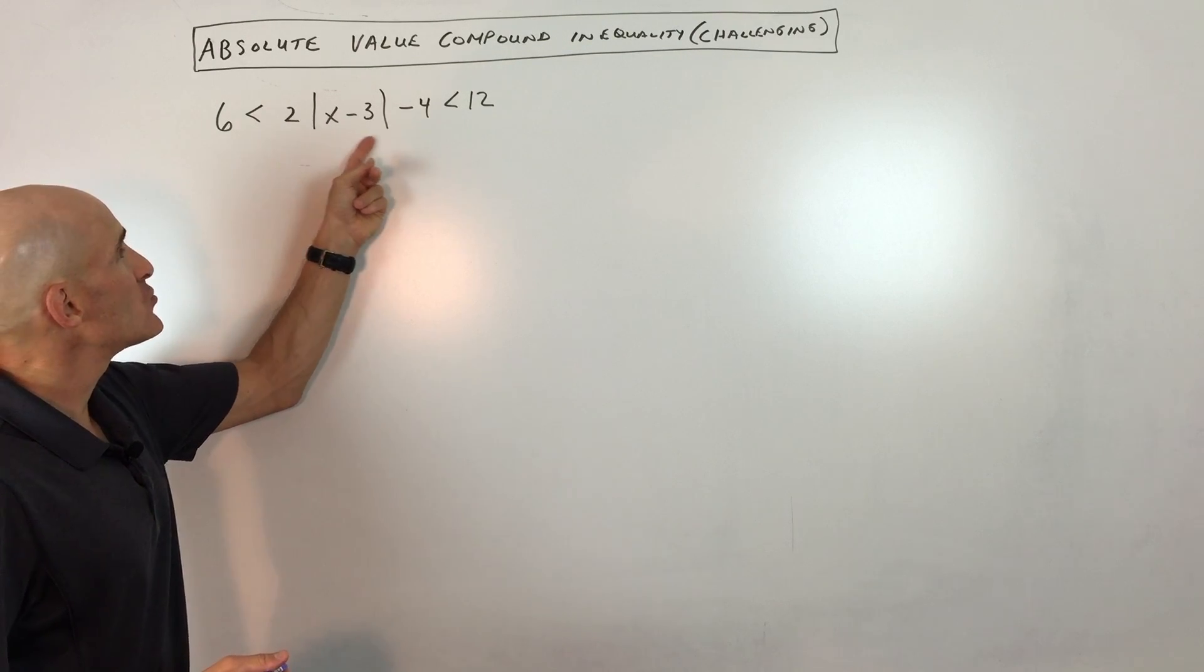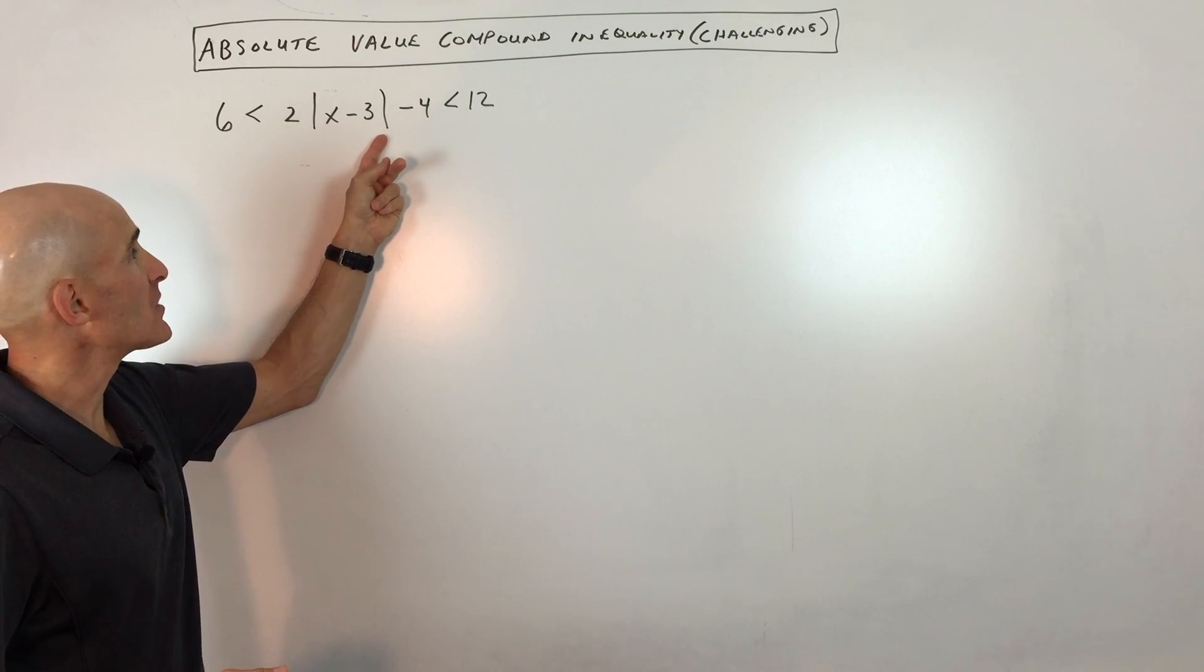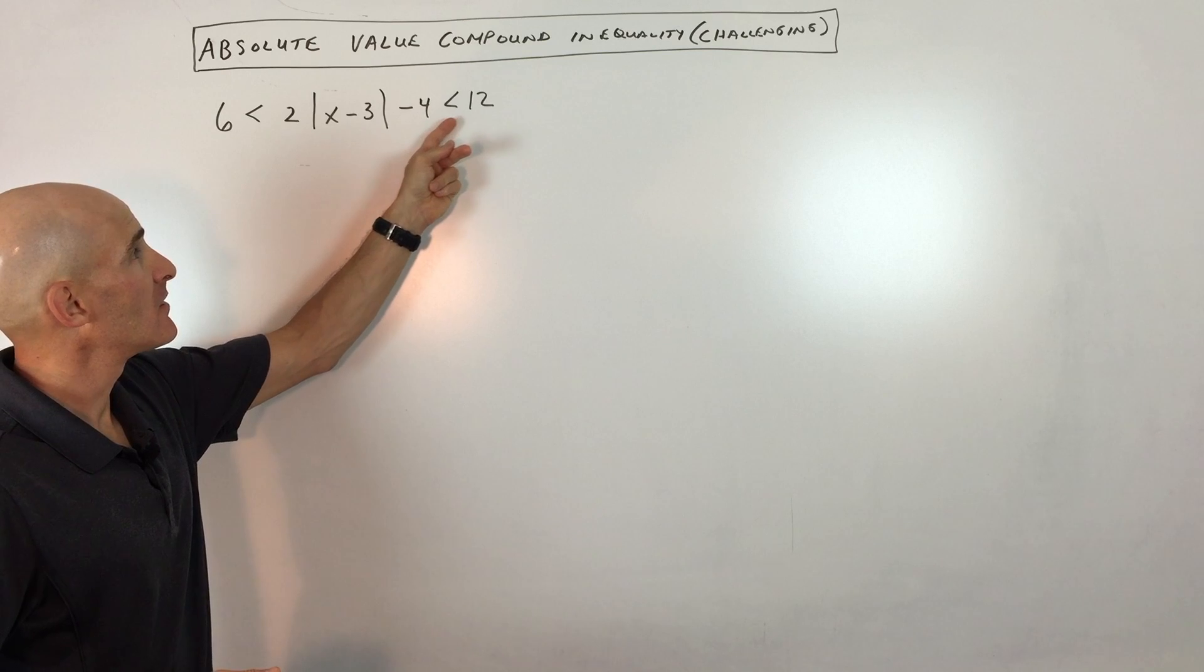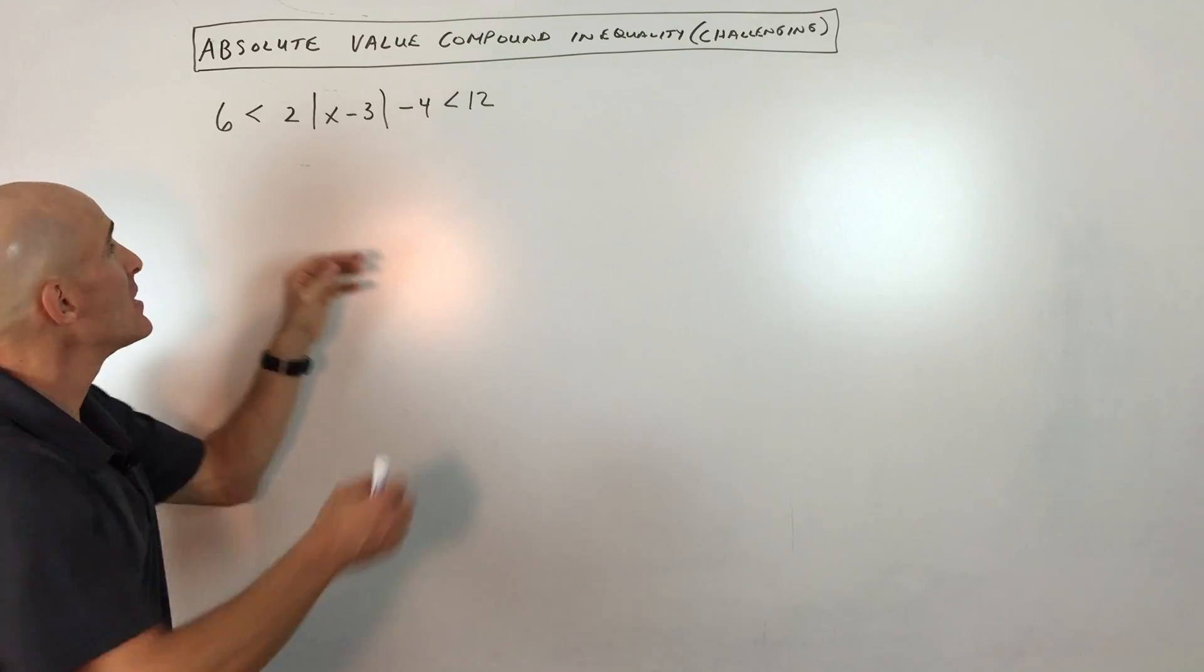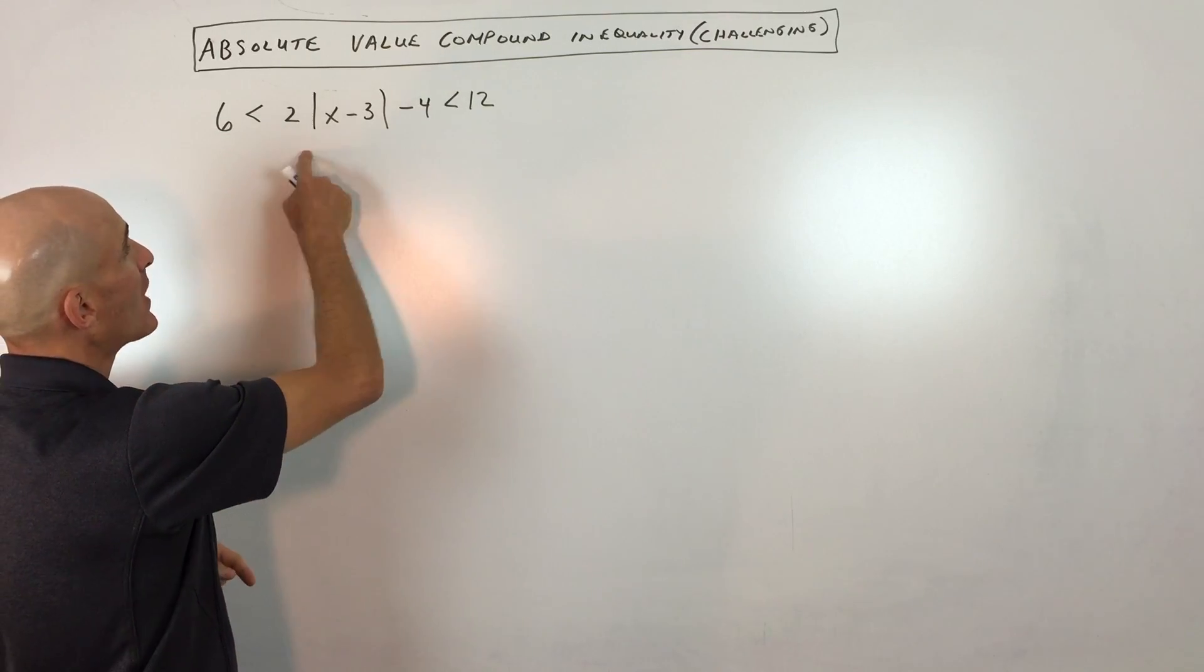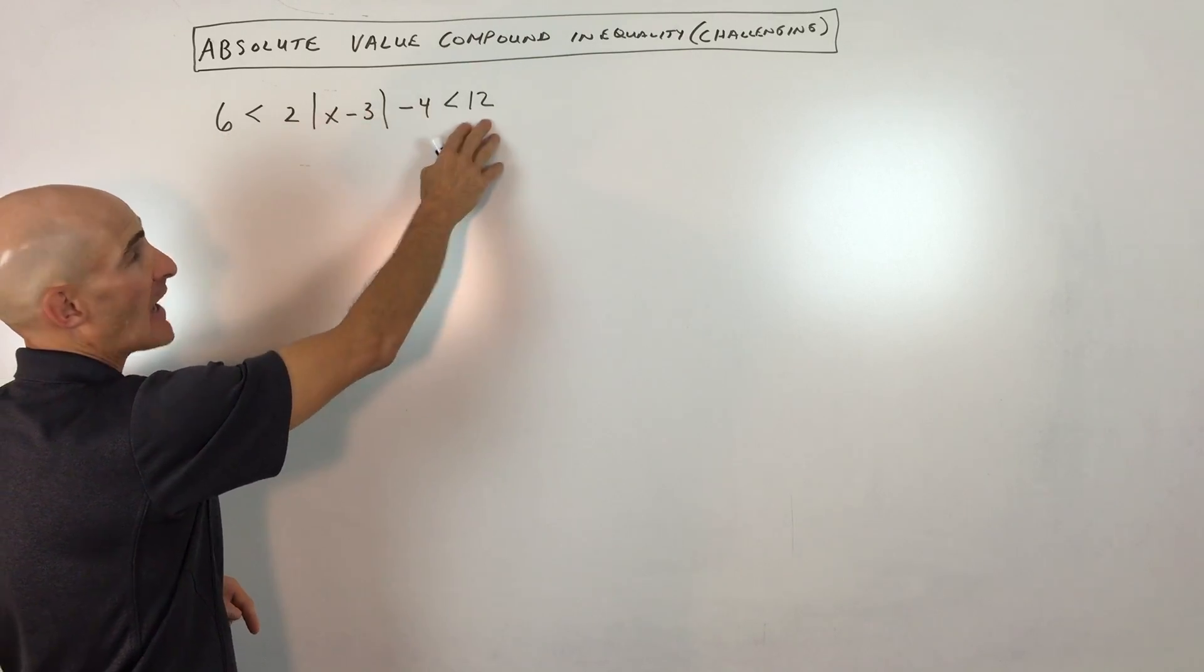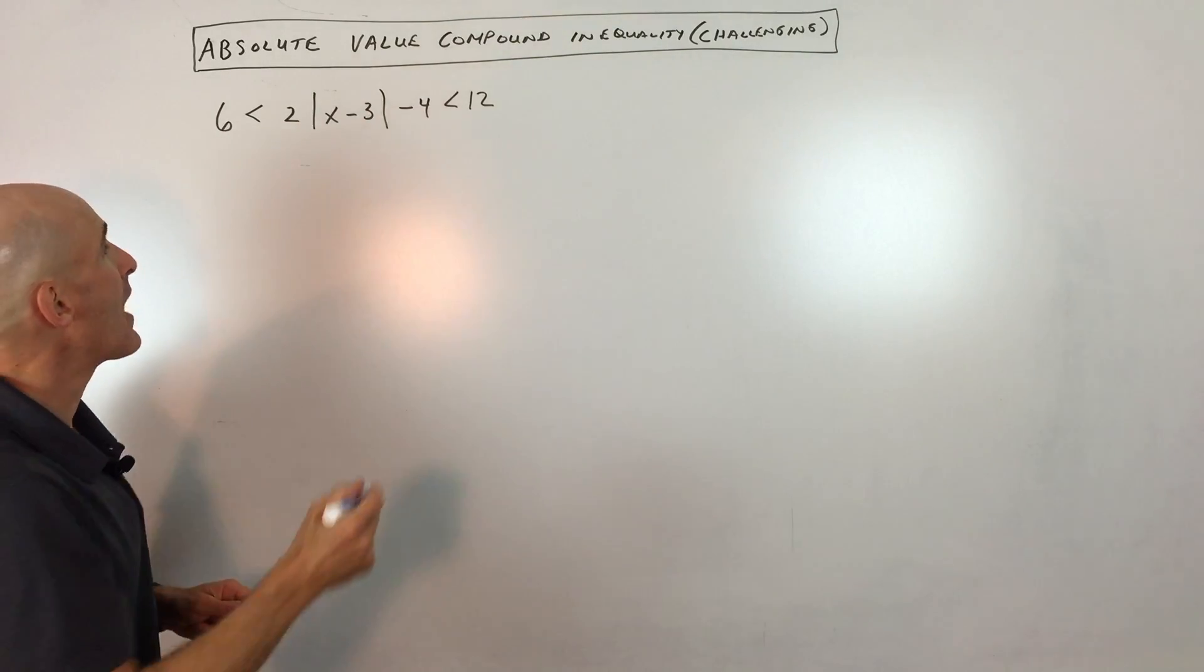We have 6 is less than 2 times the absolute value of x minus 3 minus 4 is less than 12. So it's a compound inequality. This whole quantity here is greater than 6 and less than 12.